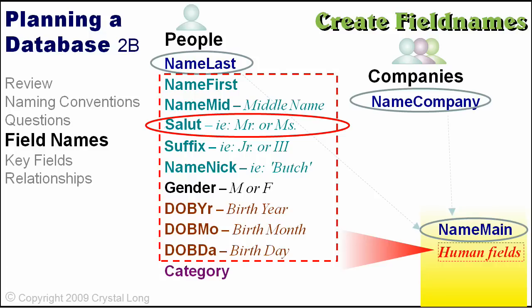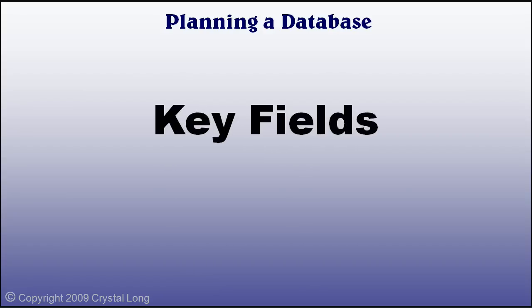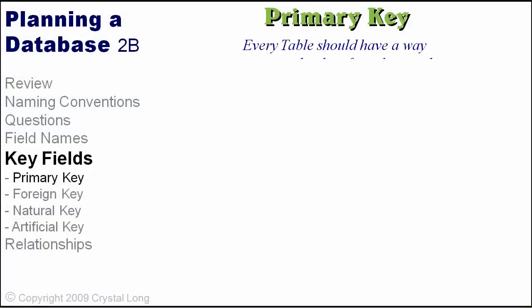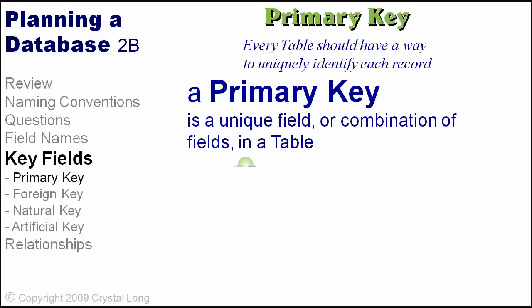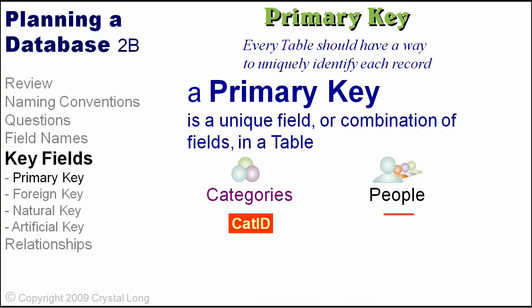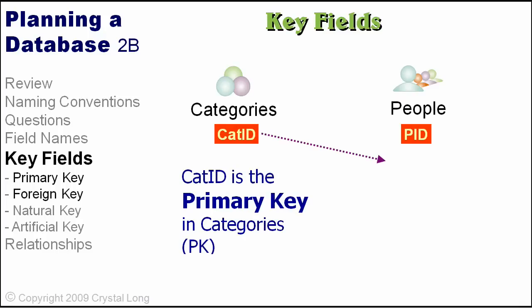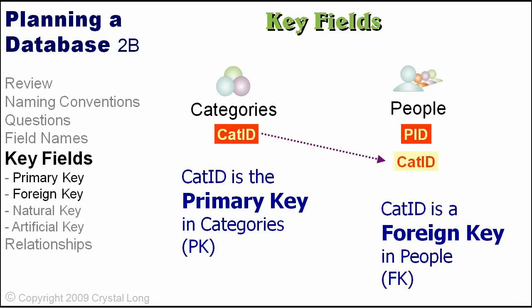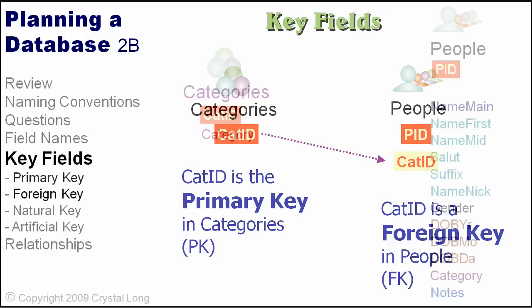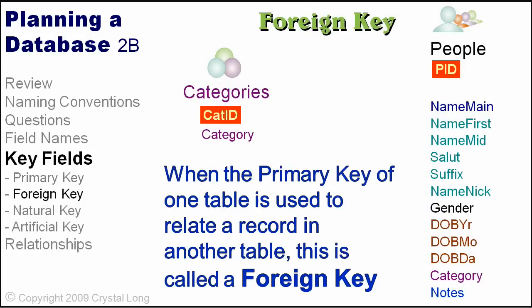Every table should have a way to uniquely identify each record. A primary key is a unique field or combination of fields in a table. Access has a data type called auto number, which is a unique long integer generated by Access — this is what we will use for the primary key. In the categories table, cat_ID is the primary key. In the people table, cat_ID is a foreign key, so if we have cat_ID, we do not need the category field.